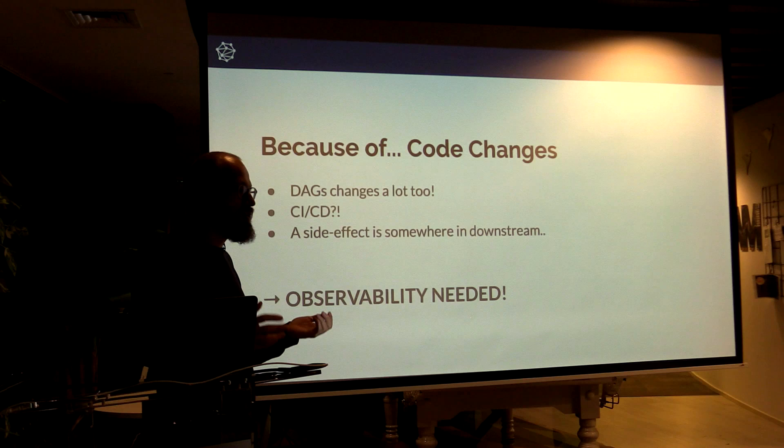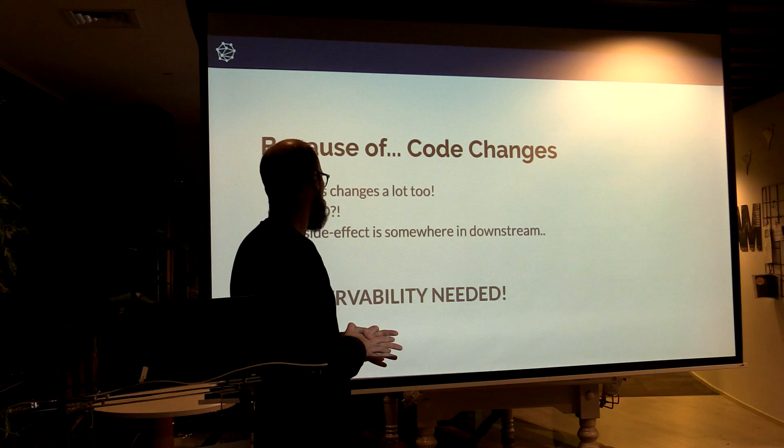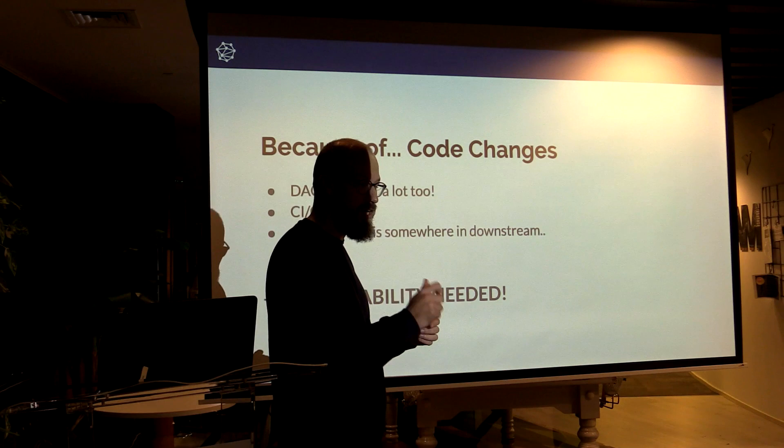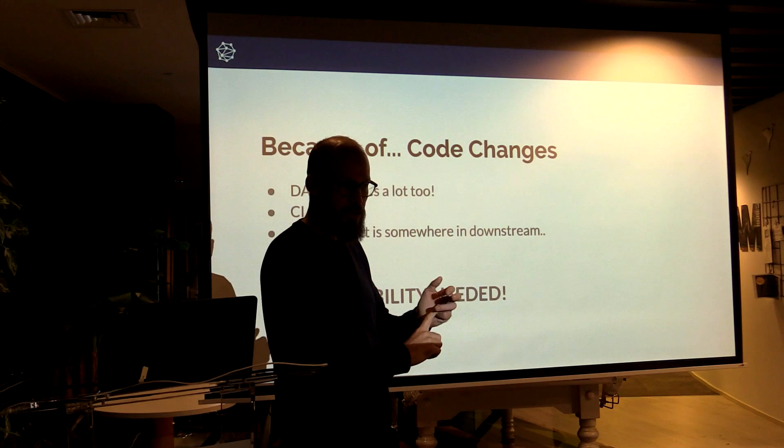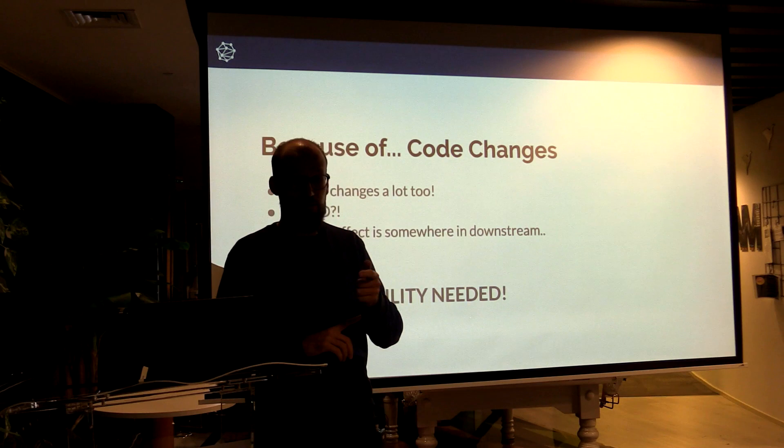If you start to categorize the reasons, the first bucket is code change — the code of the pipeline changes. Every time somebody wants to add another small feature, the code inside the operator changes because different people are working on it: data scientists put more code, analysts put more code, people optimize their Spark jobs, their Hadoop jobs. There's a huge code change all the time.